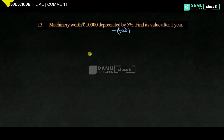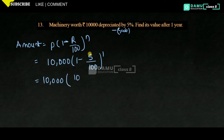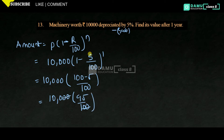Using the depreciation formula: A = P × (1 − R/100)^n. With n = 1, P = 10,000, R = 5%: A = 10,000 × (1 − 5/100) = 10,000 × (95/100). Cancelling two zeros: 100 × 95 = 9,500 rupees.